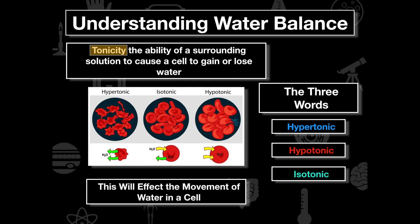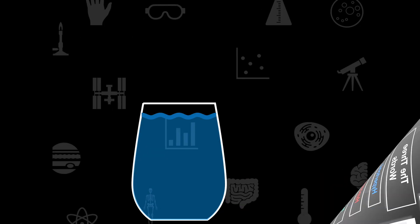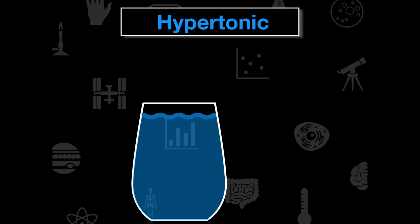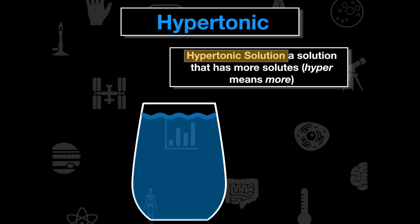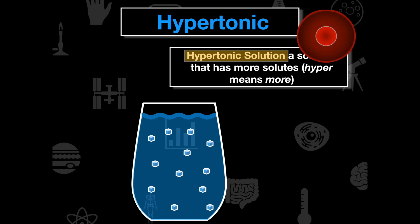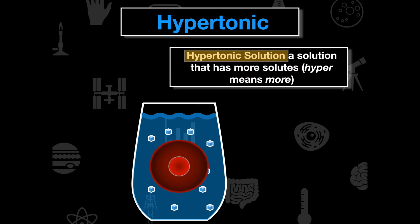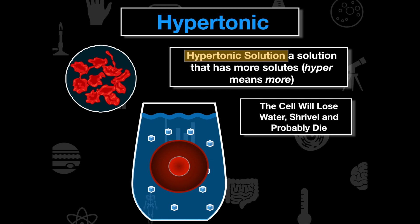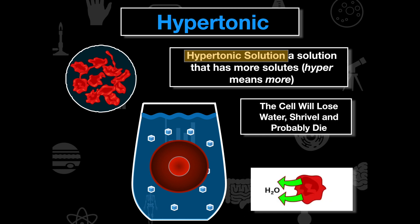A hypertonic solution is a solution that has more solutes — hyper meaning more — so it has lots and lots of salt. If we drop our cell into a hypertonic solution, the cell is going to shrivel up and die. The water moves out of the cell to where there's more salt. We're dropping the cell into a very salty solution compared to the cell's interior, so the water exits and the cell shrivels up.